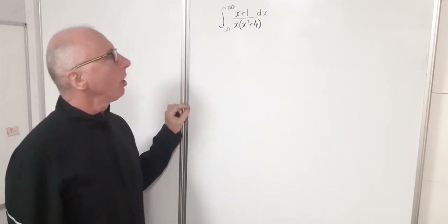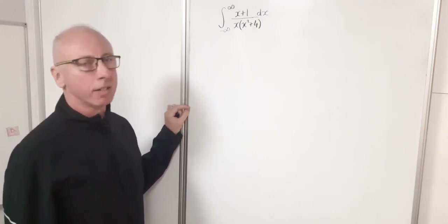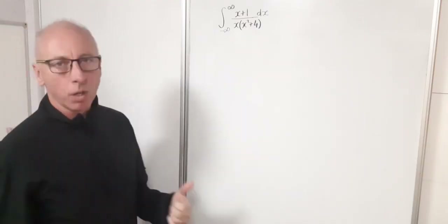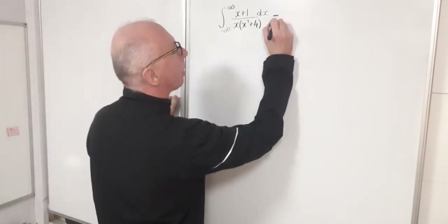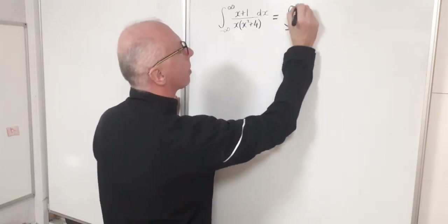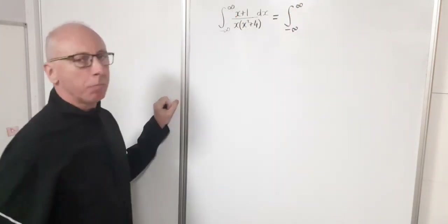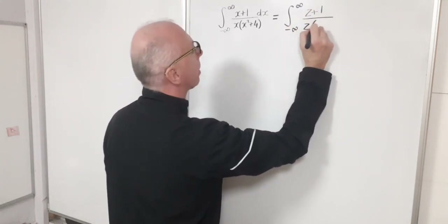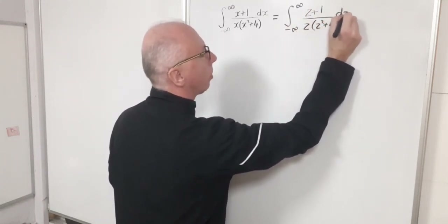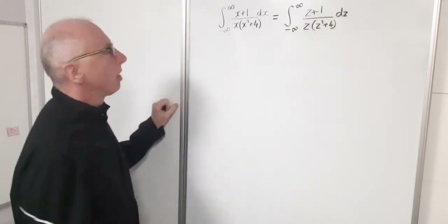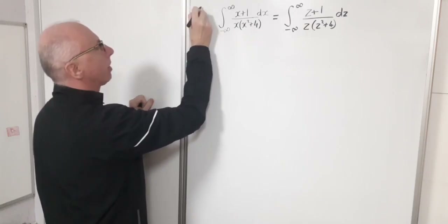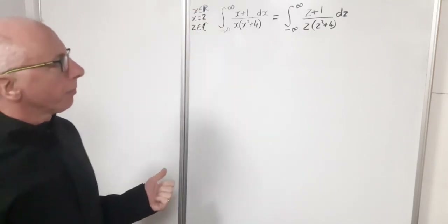One other way we could approach this is to use complex analysis, which makes the setup pretty straightforward from the beginning. We can rewrite this integral using a complex variable: from negative infinity to infinity, letting x become z, so the integrand becomes (z+1) over z(z²+4) dz, where z is in the complex plane.